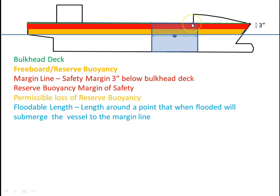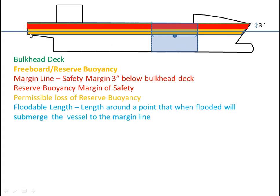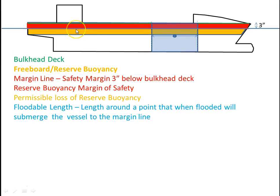In theory, this blue section would represent the same volume of the ship as this yellow area. If we flooded the vessel in this area, the waterline would move up to that margin line but not beyond it. This red area here would be our margin of safety.